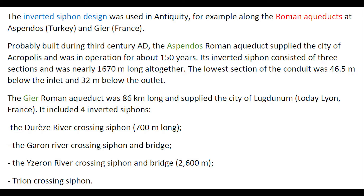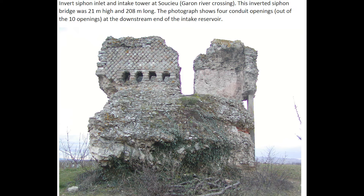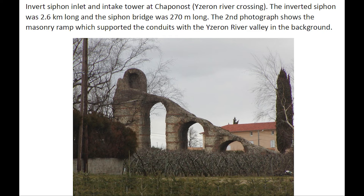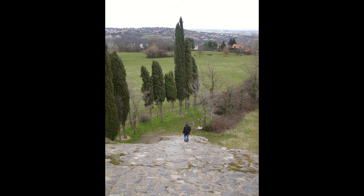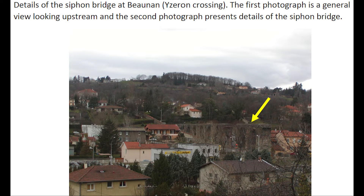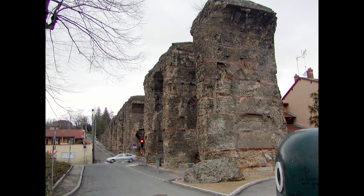In modern France, the Gier-Romane aqueduct was 86 km long and was supplying the city of Lugdunum, nowadays Lyon, and it was equipped with four inverted siphons. The first photograph shows the inverted siphon inlet tower at Soucieux for the crossing of the Garon river. At the pipe opening we see here, we are basically at the start of the inverted siphon. This intake tower at Chaponnay is for the Iseron river valley crossing. On the second photograph, we see the masonry ramp going downhill towards the Iseron river valley. The next two photographs show the siphon bridge itself at Beaunant, with the yellow arrow pointing to the bridge structure, and a second photograph detailing the massive siphon bridge.